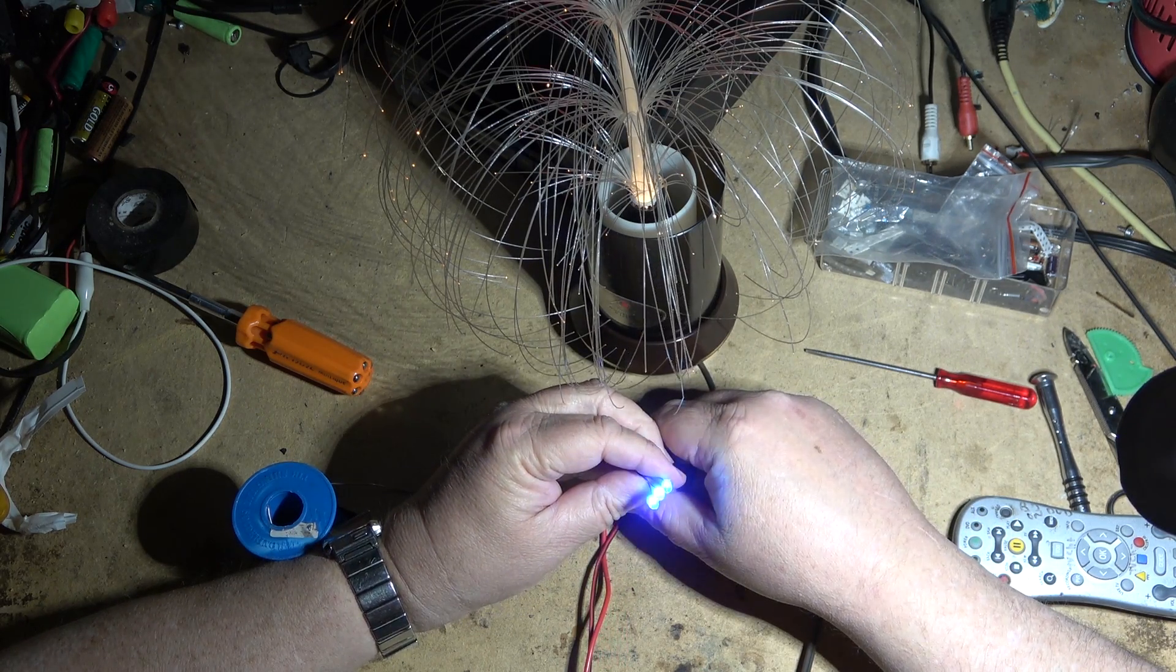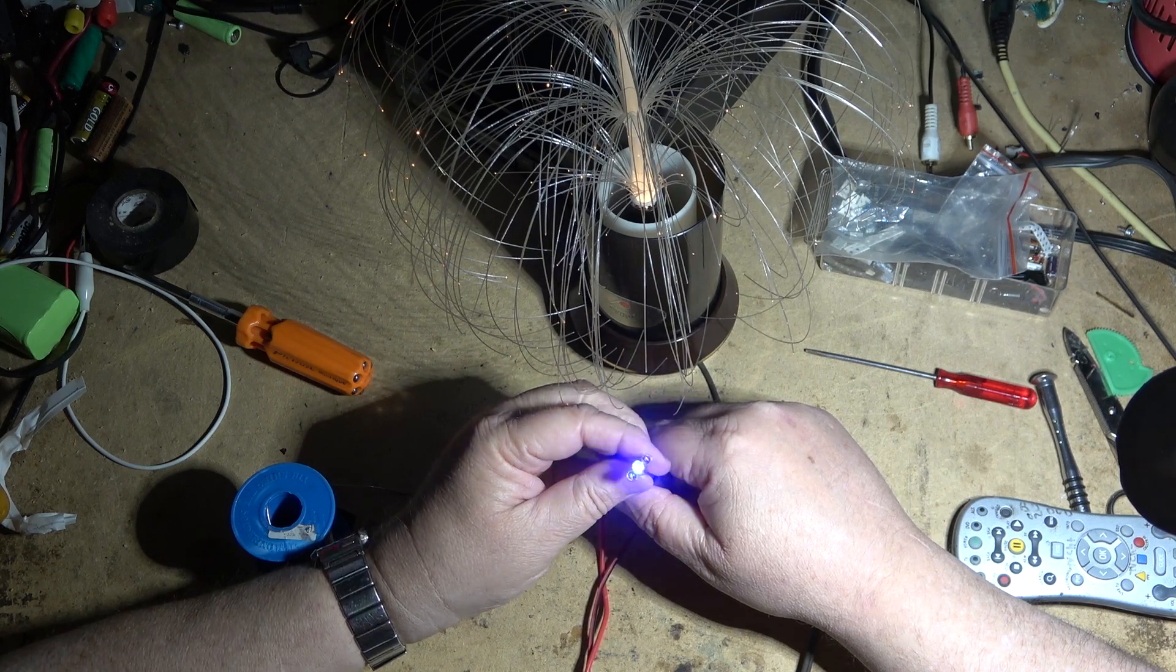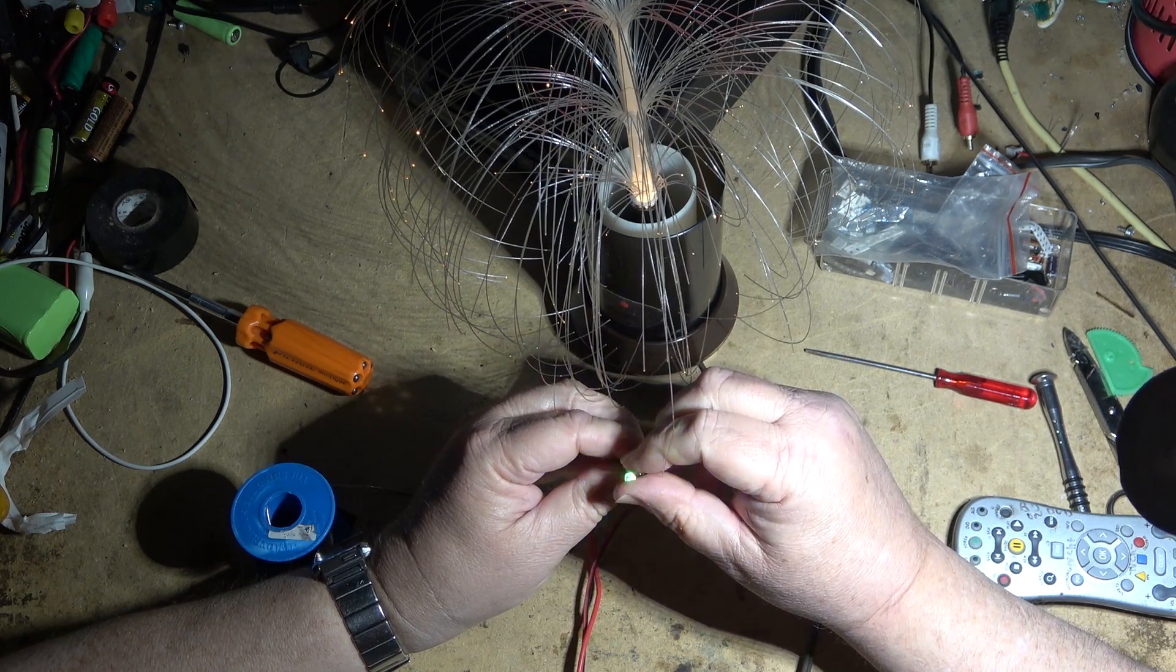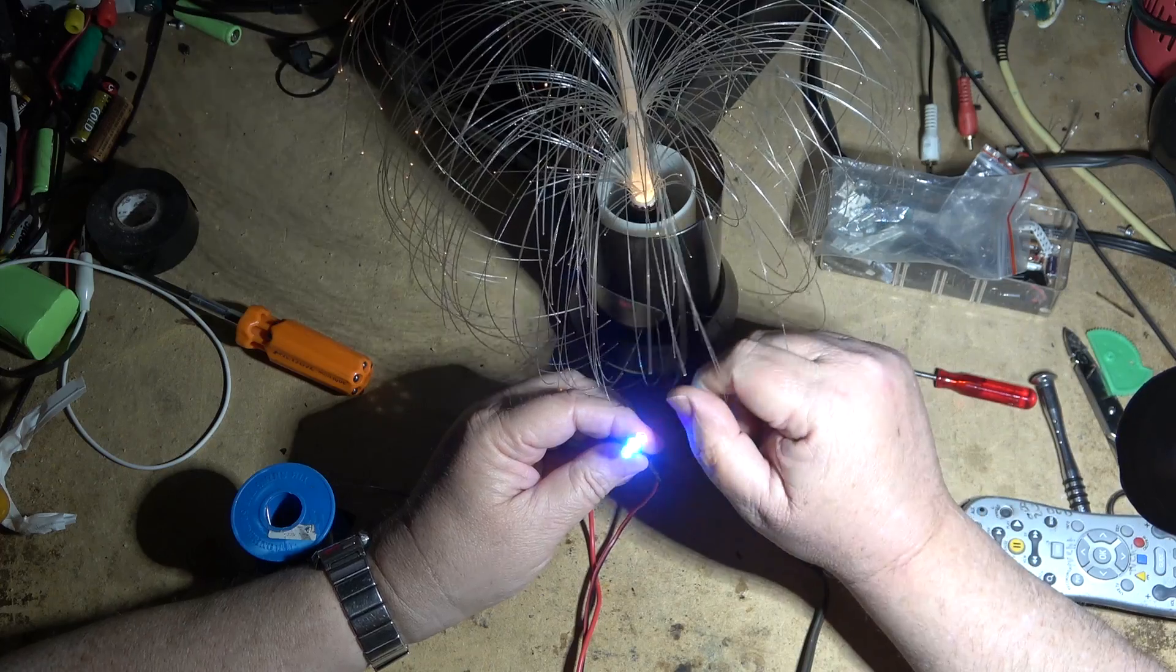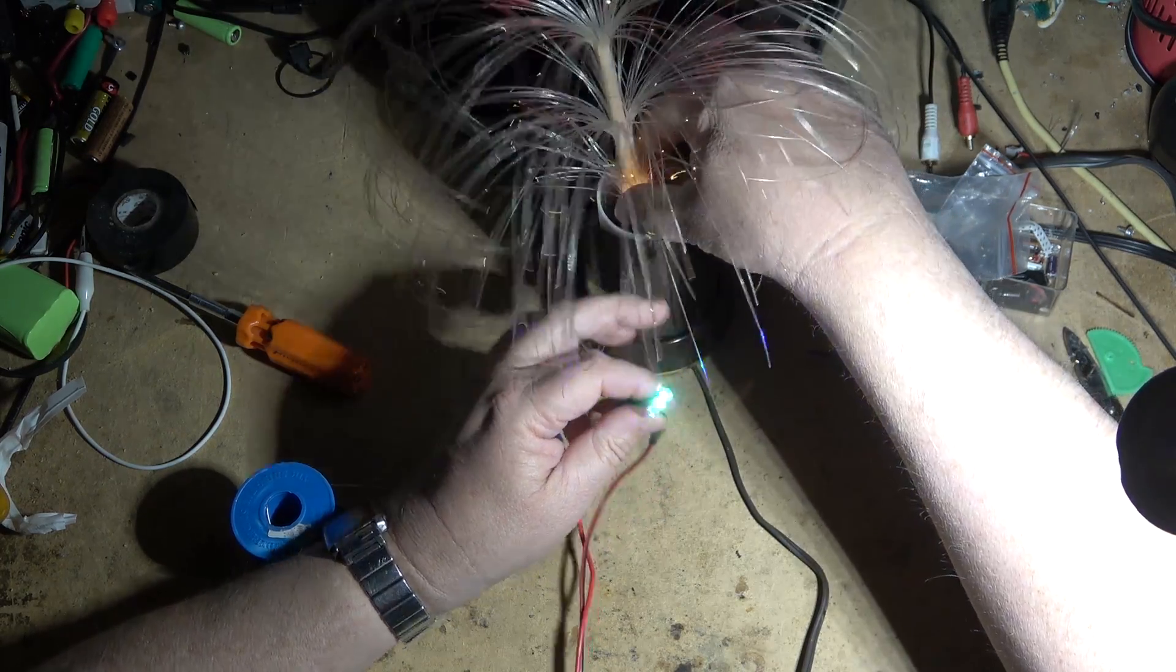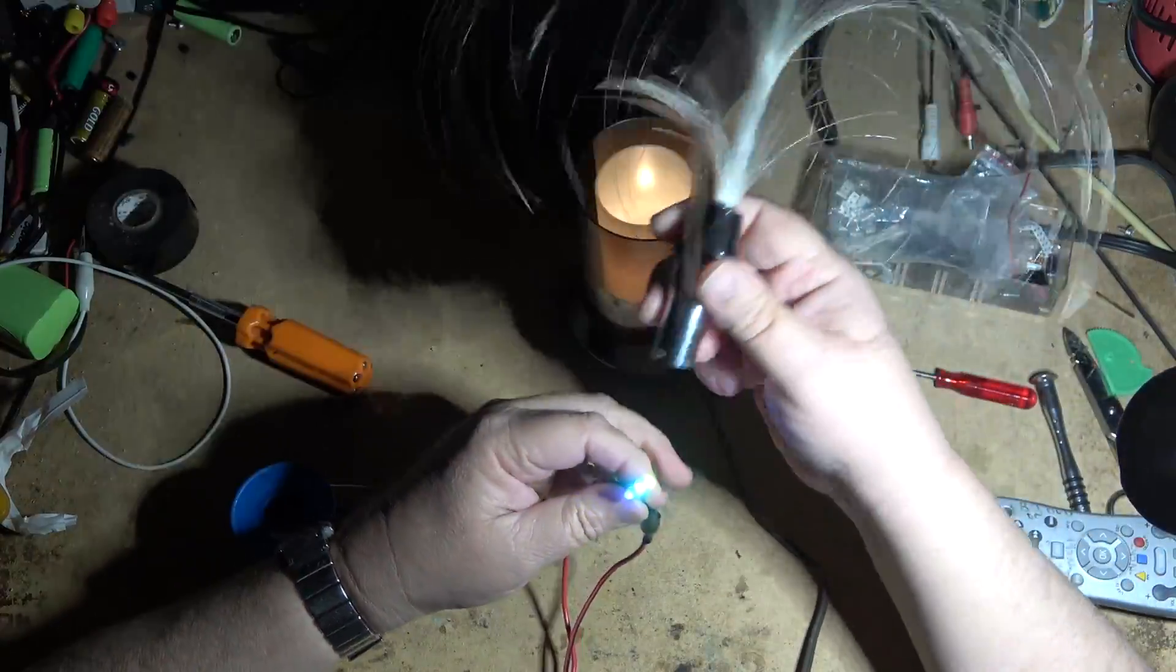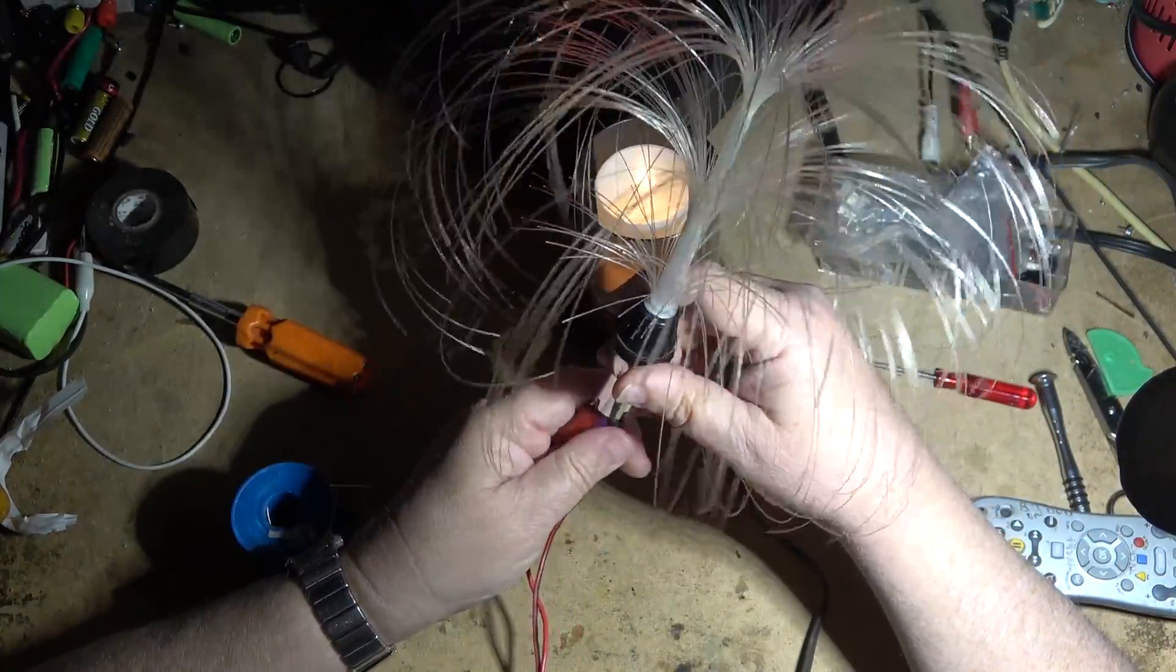Now they will hopefully blink at different rates. I'm thinking if I stick this into the base of the fiber optic, we could get a cool effect. So let's just pop the fiber out of the lamp holder and we'll put these in here, just see how this looks.